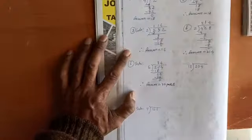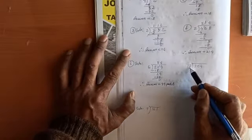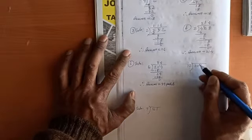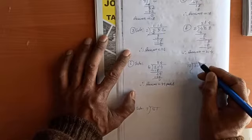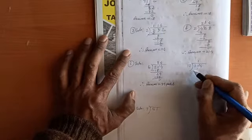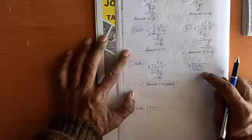Solving 204 candles divided by 12: 12 one time is 12; 20 minus 12 leaves 8.